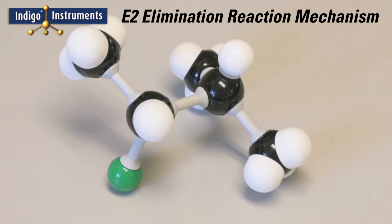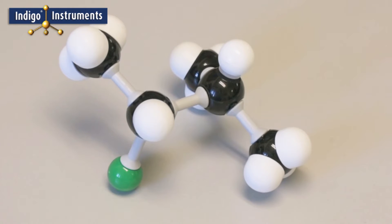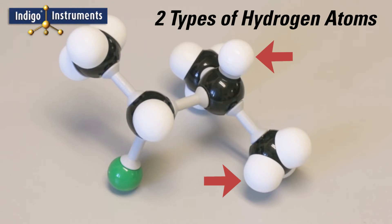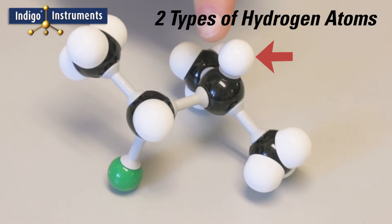The E2 elimination reaction mechanism can be shown using our molymod models. One feature that we offer in our sets is two different hydrogen atom types: a sphere and a dome. This allows you to tag specific parts of a model.